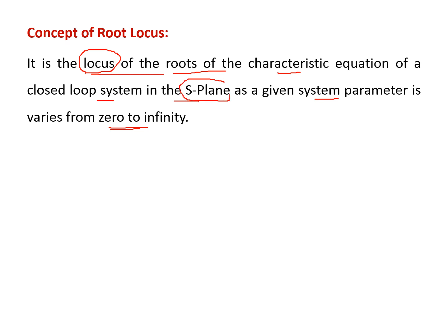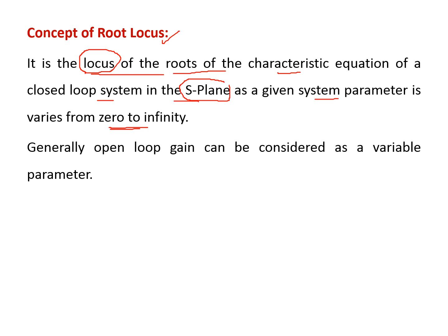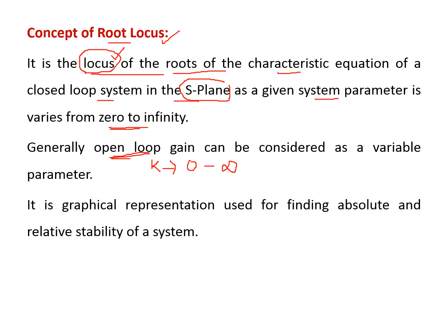Generally, we consider the open loop gain value as the variable parameter. We vary the open loop gain — that is the K value — from 0 to infinity to draw the root locus. By varying this open loop gain value from 0 to infinity, we obtain the locus that is the root locus.